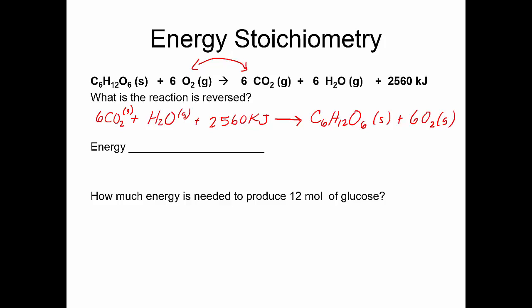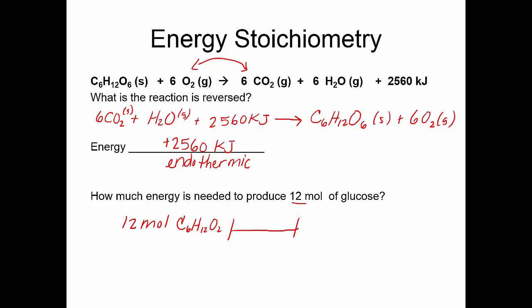The reaction needs energy in order to produce the sugar and 6 moles of oxygen. In the reverse reaction, the energy is going to be the opposite — it's now positive, and that's an endothermic reaction. How much energy is needed to make 12 moles of glucose? For 12 moles of glucose, I know for 1 mole it's 2,560 kilojoules, so just take 12 times 2,560. That gives 30,720 kilojoules — treating everything as exact numbers.